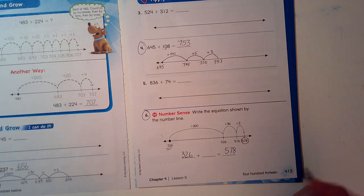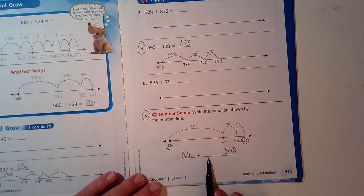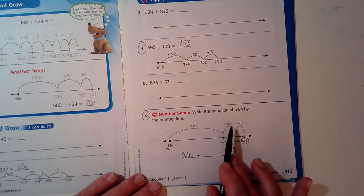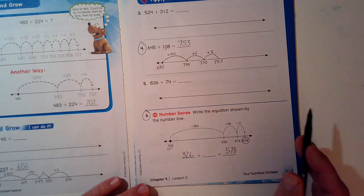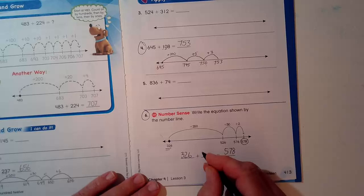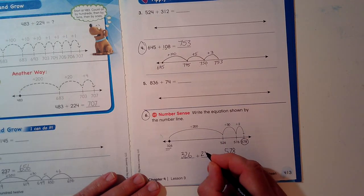Now, how do I figure out what my addend is, the missing addend? I add this, plus this, plus this, plus this. And all I do is two hundreds, five tens, two ones.